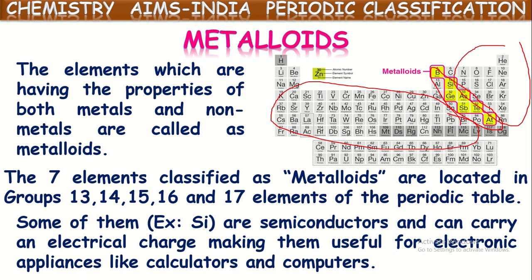Some of them — for example silicon — are semiconductors and can carry electrical charge, making them useful for electronic appliances like calculators, computers and other electronic goods. In almost all electronic appliances, silicon chips are used. Even though silicon is a metalloid, it can conduct electricity — less than metals, but it does. That is why it is called a semiconductor. Because of this special property, silicon is used for making all these electronic appliances.